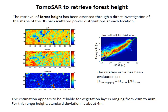We can derive forest top height from the tomographic profile and compare it with LIDAR. The comparison shows good consistency for vegetation layers ranging from about 20 to 40 meters, which corresponds to the expected forest top height range in the LIDAR data. For this height range, the estimated standard deviation is less than 4 meters.